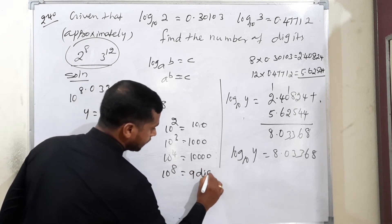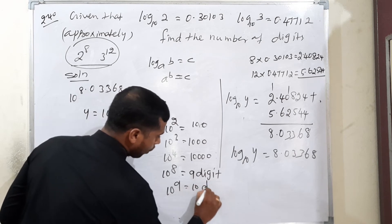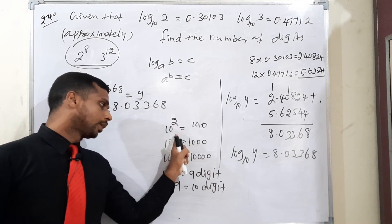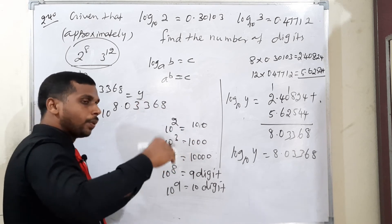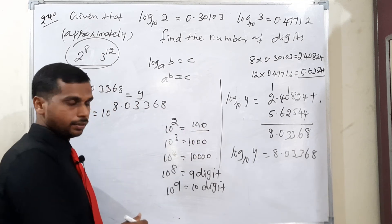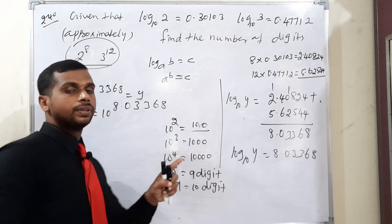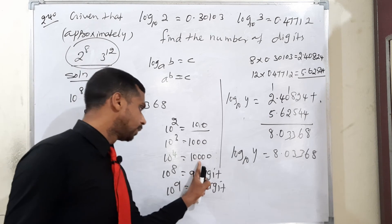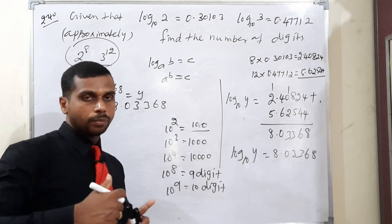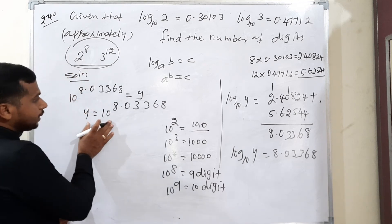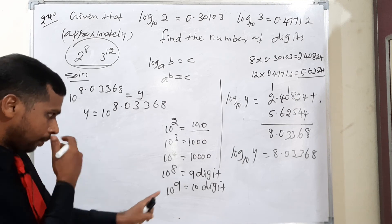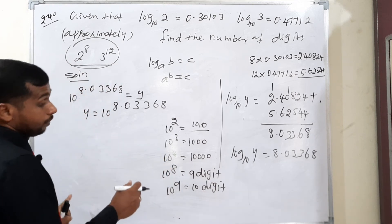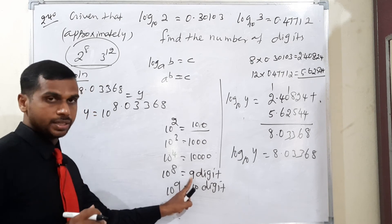10 to the power 9 means 10 digits. If the power is 2 point something, like 2.99, it's still 3 digits. When it starts at power of 3, we get 4 digits. Similarly, 4.99 has 5 digits. If you have power 5, then 6 digits start. So your condition, 10 to the power 8 point something means 9 digits. The total number of digits is 9.